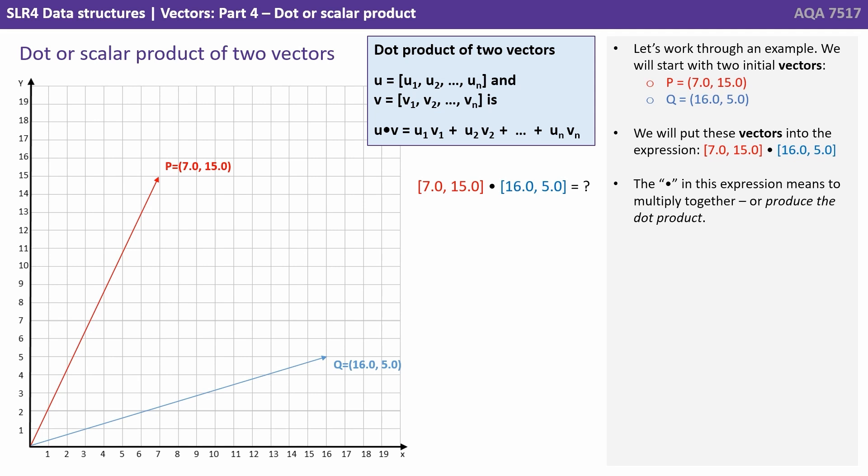We'll put these two vectors into the expression. Now the dot symbol in the middle there in this expression means to multiply together, or produce the dot product.